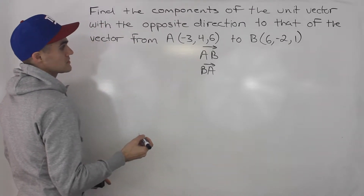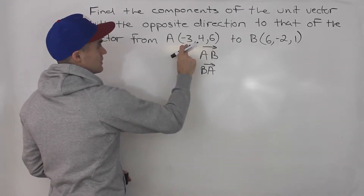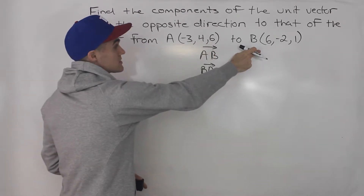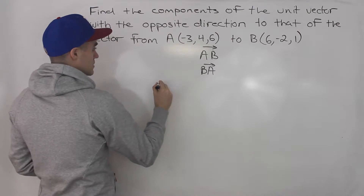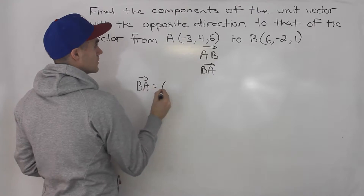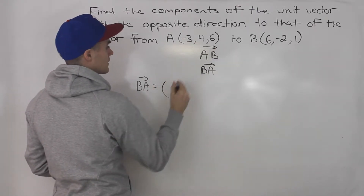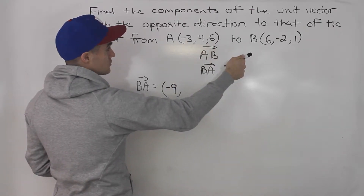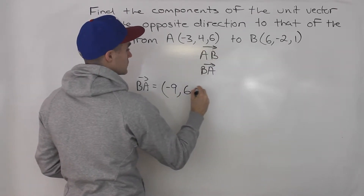To find the components, we take the coordinates of the point at the head and subtract the coordinates of the point at the tail. So the components of BA would be: negative 3 minus 6, which is negative 9; 4 minus negative 2, which gives us 6; and 6 minus 1, which gives us 5.